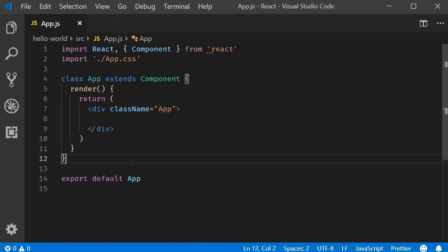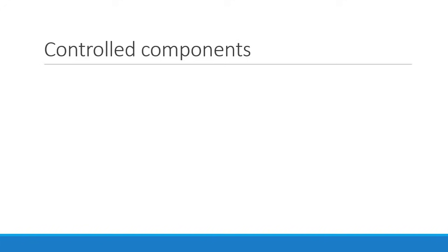In this video we are going to learn the basics of working with forms in React. We will see how to capture input from form elements like the input tag, textarea tag, and select tag, and have the data available for form submission. In regular HTML, form elements like input and textarea handle user input on their own, but we want React to control the form elements instead. Such form elements whose value is controlled by React are called a controlled component.